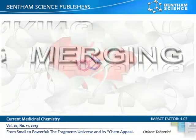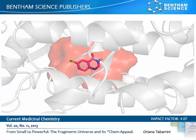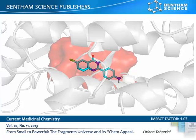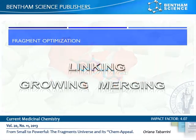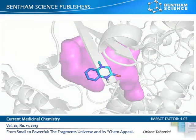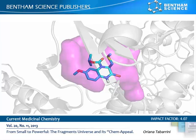In the merging strategy, two fragments that bind with a similar binding mode can be mixed into a new compound that contains all the key binding features. In the last strategy, the hit compound is grown within the binding site to reach additive and high-quality interactions.